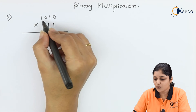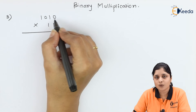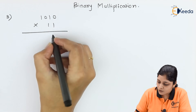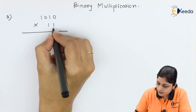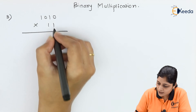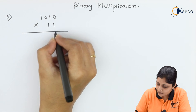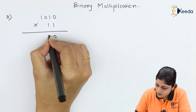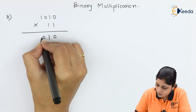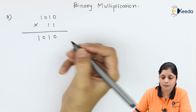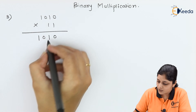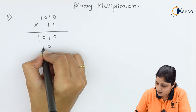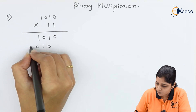For the third example, you have 1010 multiplied by 11. Multiplying by the first 1 gives the same term: 0 1 0 1. For the second 1, you again get 0 1 0 1, shifted one position to the left.